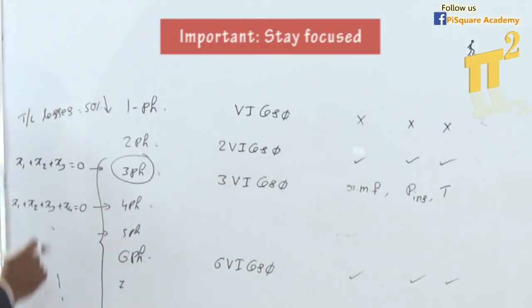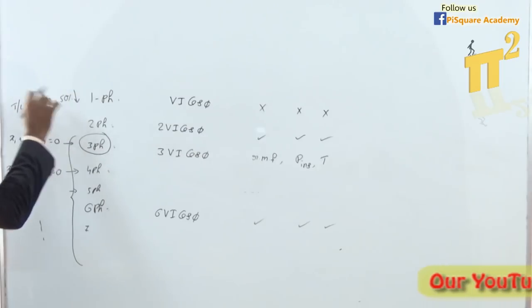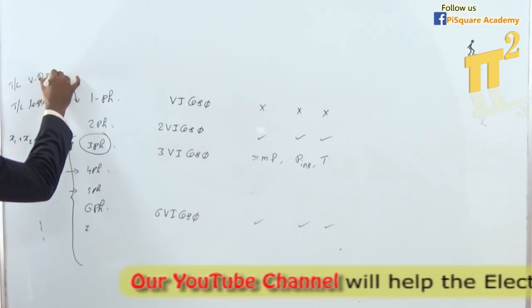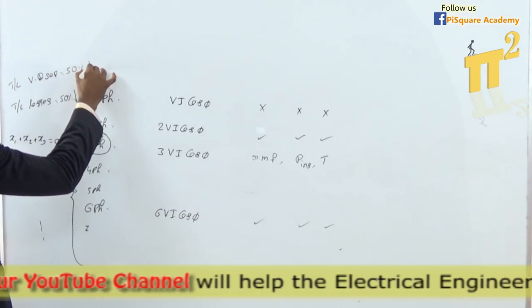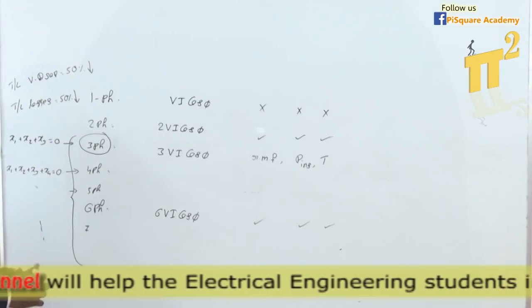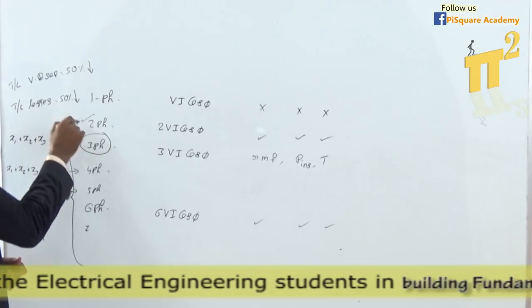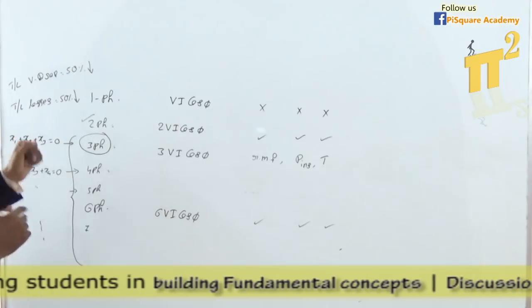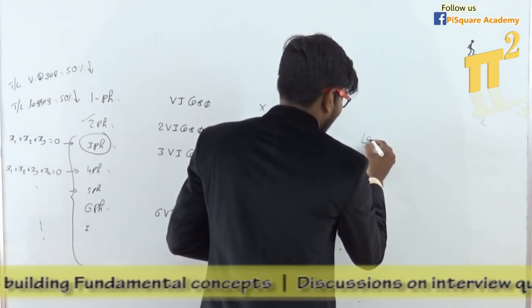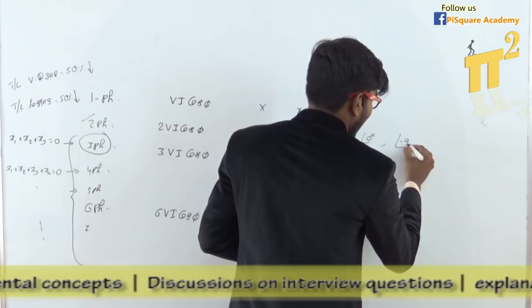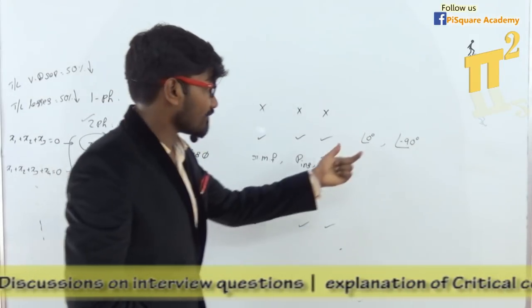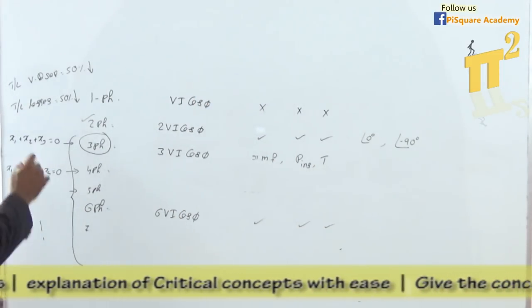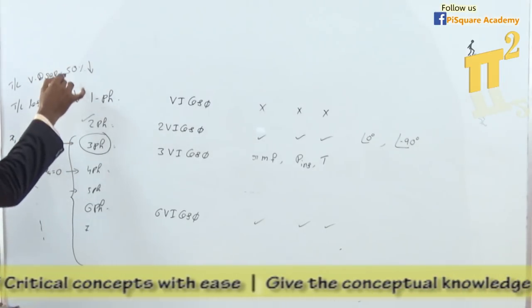This attribute makes transmission line losses decrease by 50% and voltage drop also reduces by 50%. But if you use 2-phase, you will not get this feature, because in case of 2-phase this condition is not true. In 2-phase, the first phase is at angle 0 and the second phase is lagging or leading by 90 degrees. If you add these 2 signals, you will not get 0.